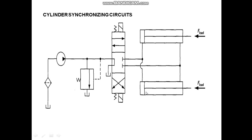You must keep this point in mind: if the load acting on both cylinders is the same, then the pressure created by both loads will be the same and extension will start at the same time. To achieve the same velocity for cylinder 1 and cylinder 2, the areas must be the same — the blank end (piston) area of cylinder 1 and cylinder 2 must be equal, and the rod end area must also be equal. Only when cylinder areas are equal and loads are equal will both cylinders extend and retract at the same time.